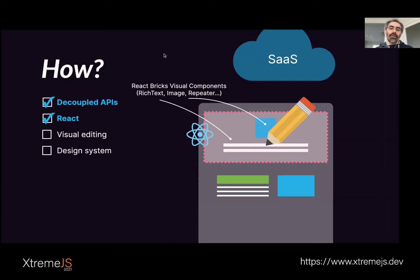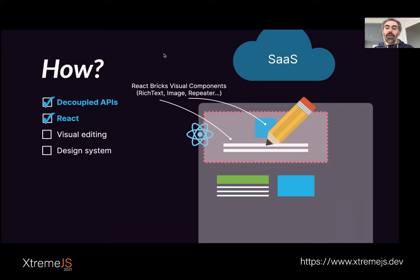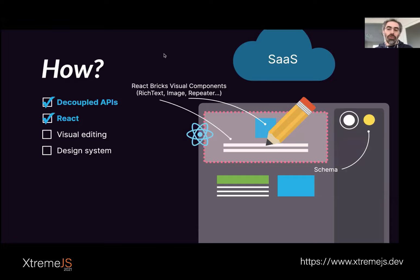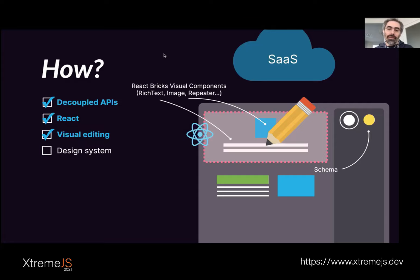For props that are not directly readable, like background color, you have a schema static property where you can map props to sidebar controls. For example, this brick maps a background color to a color picker in the sidebar, so when the user changes the color, you receive a prop to use for conditional rendering. The set of these visually editable components is your design system, and React Bricks documents and enforces it.